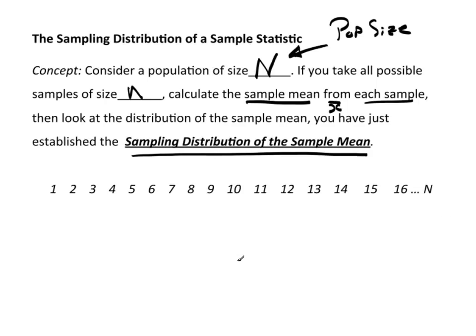Now what if I told you that that bucket actually contained means — every one of those numbers you just worked with was actually a sample mean? Then what you did is you took the sample mean and found the mean of the sample means: x-bar-bar. When I said those are just numbers you called it x-bar, but if each number happened to be an x-bar, then the average of all those averages would be x-bar-bar.